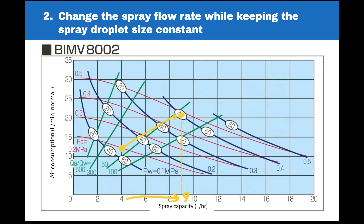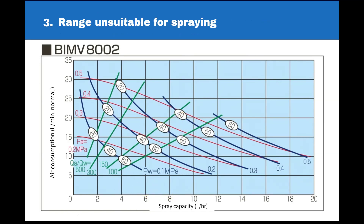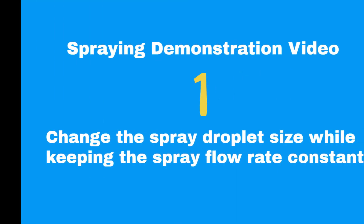Furthermore, let's observe how the spray appears in areas where spraying is not recommended — shown here and here on the diagram. The demonstration shows instances where spraying fails or becomes unstable.